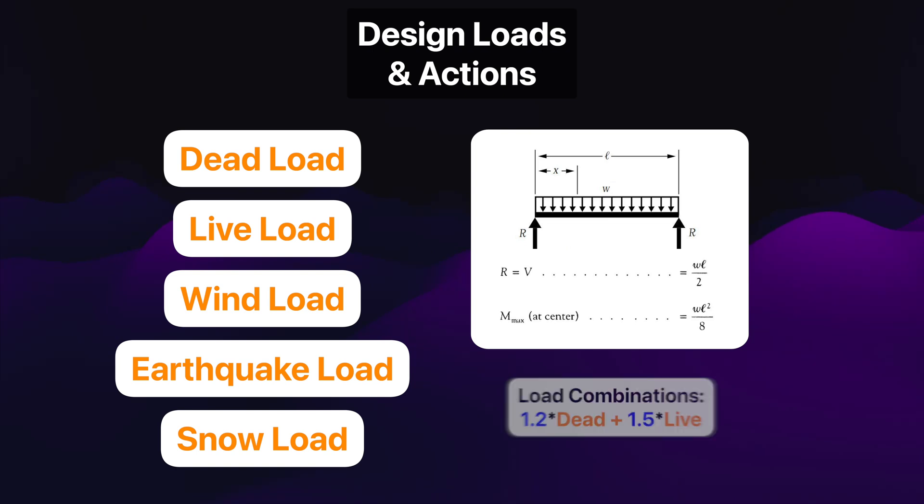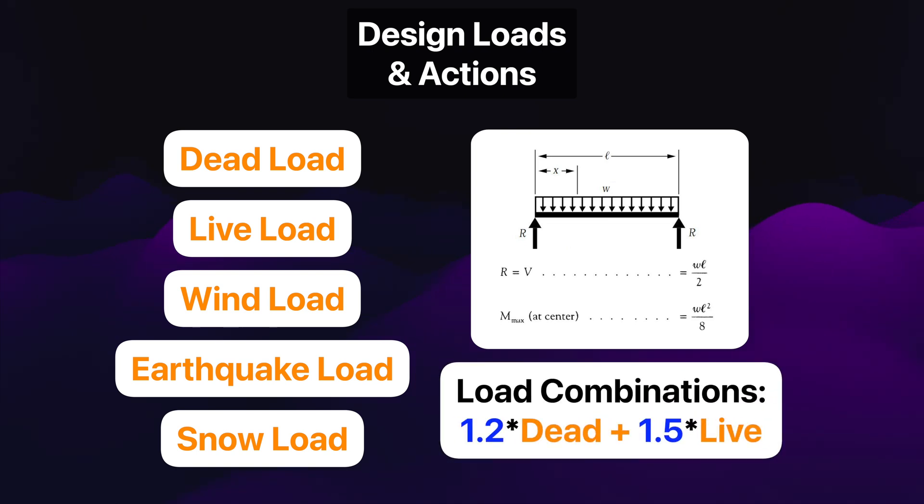To work out your design action, you need to combine design loads — like dead and live — and with this combined loading you'll get your design action. To make things a little more complex, when you combine your design loads your loads need to be factored to add an additional layer of safety. The amount each load gets factored depends on the load combination you're using and the codes you're working from. Usually you'll end up with a bunch of different load combinations, and out of all these combinations it'll be your job to find the worst one. This is something you'll have to do on a daily basis as a structural engineer, so once you've done it a couple of times, you'll get the hang of it.